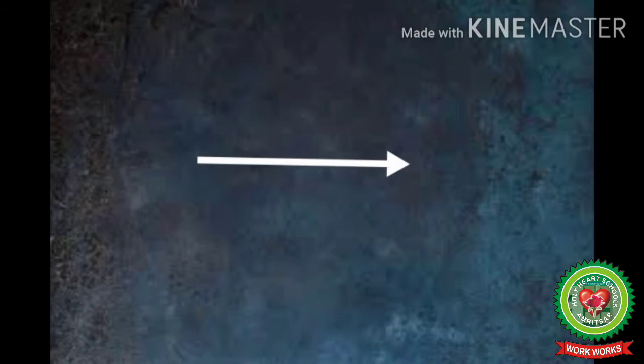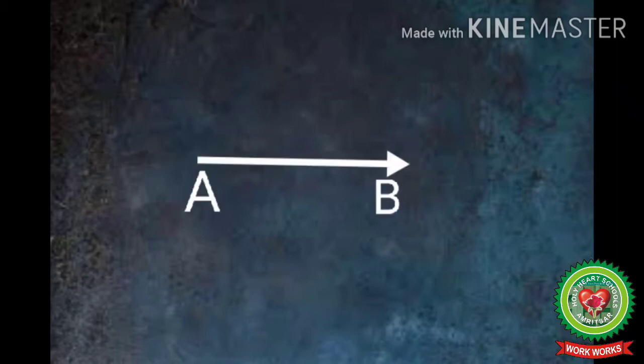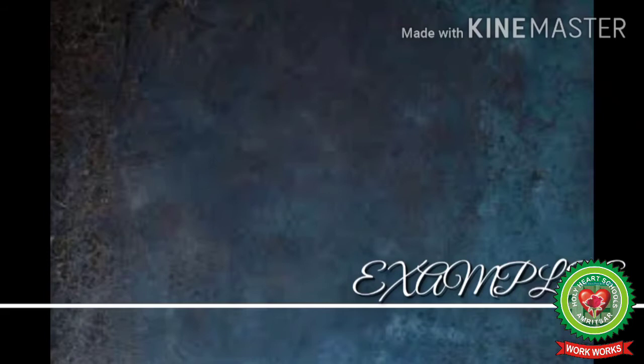Now see children, this is ray. You can see that it has arrow on one side, it means it has no ending point and we can extend it from that side only. And we can name it as A B in capital letters.